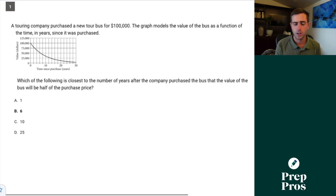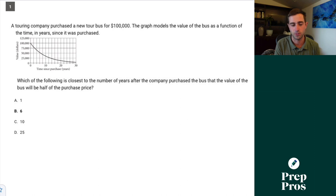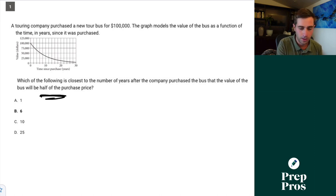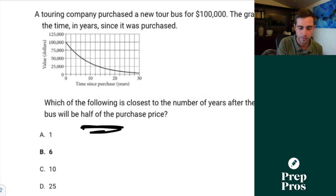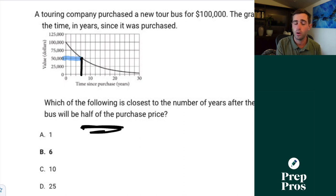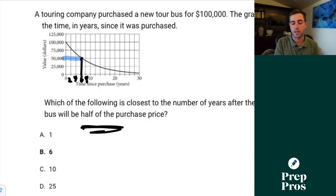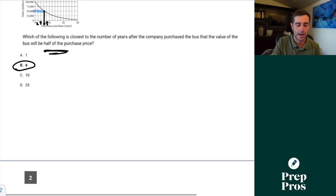Question number one. A touring company purchased a new tour bus for $100,000. The graph models the value of the bus as a function of the time in years since it was purchased. Which of the following is closest to the number of years after the company purchased the bus the value will be half the purchase price? Half of $100,000 is $50,000. We're looking at right about this point. Each of those lines is going to be two, so we can see it's three of those twos in — it's going to be six years.